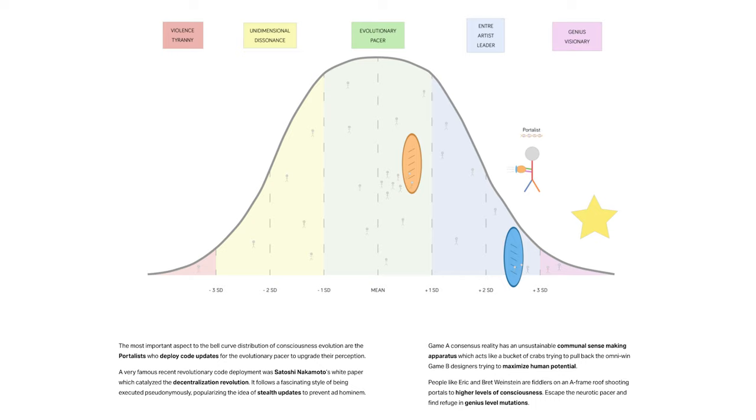Game A consensus reality has an unsustainable communal sense-making apparatus, which acts like a bucket of crabs trying to pull back the OmniWin Game B designers trying to maximize human potential.